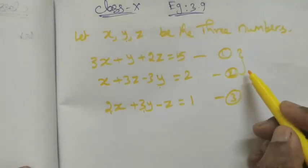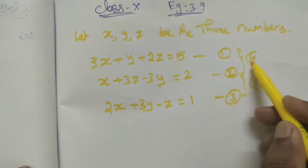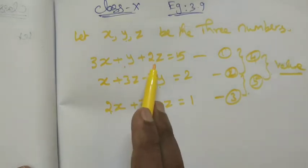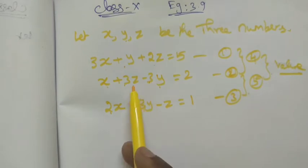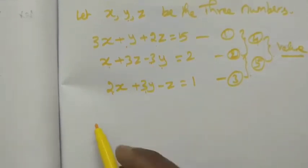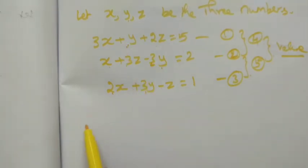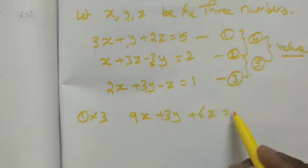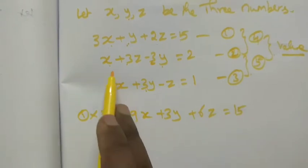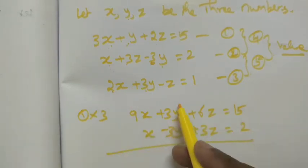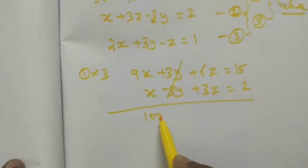Using the same concept, we substitute and eliminate. First equation: 3x plus y plus 2z equals 5. Second equation: x minus 3y plus 3z equals 2. Multiply the first equation by 3 to get 9x plus 3y plus 6z equals 15. Adding with the second equation, 3y cancels, giving 10x as equation number 4.